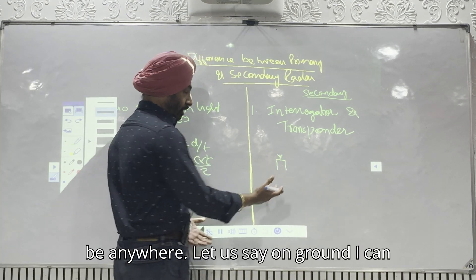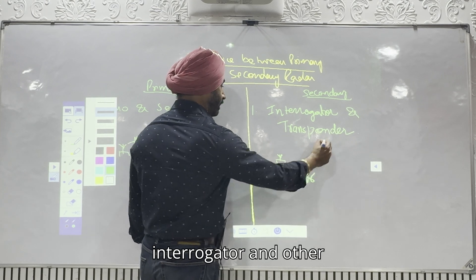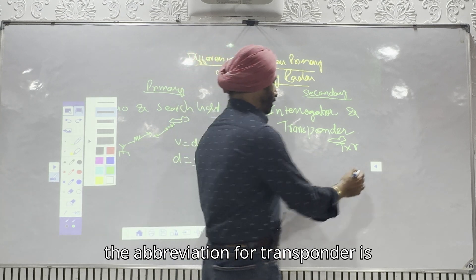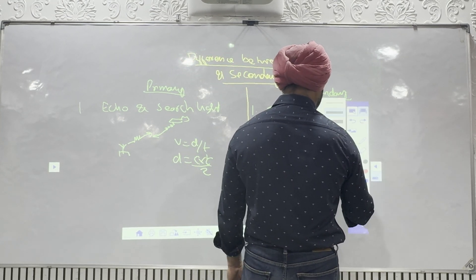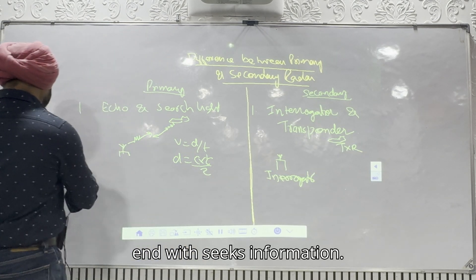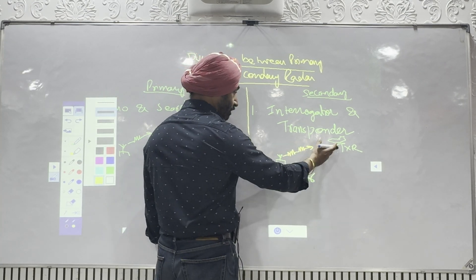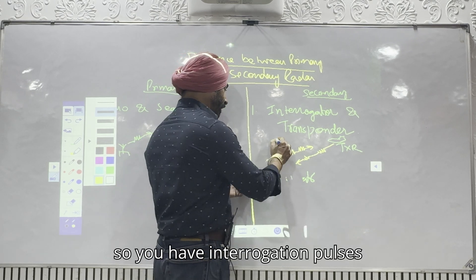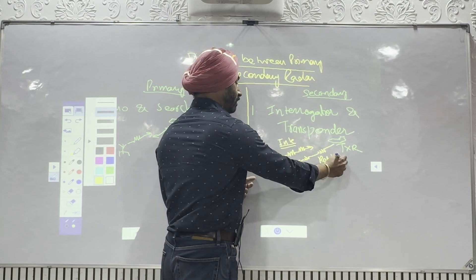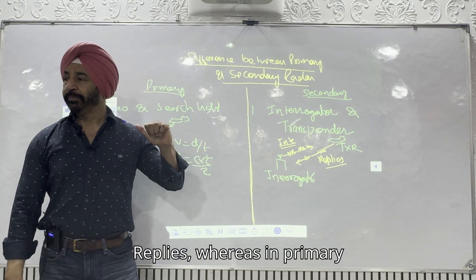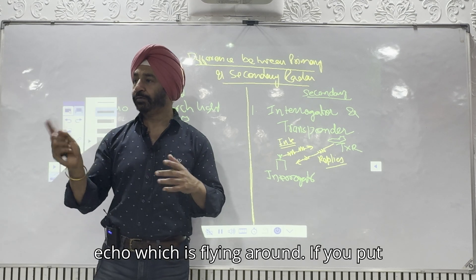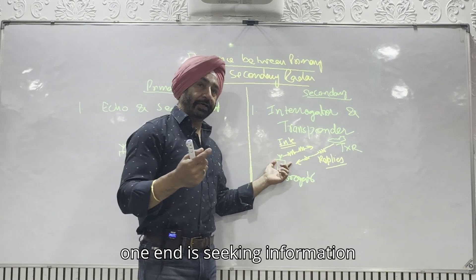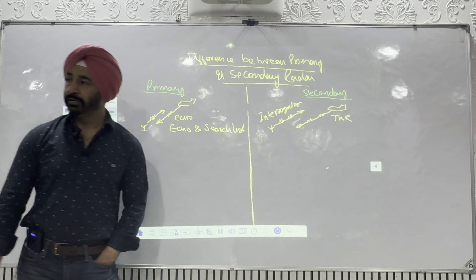One end could be an interrogator on the ground, and the other end is the transponder (TXR). TX is transmitter. The equation is simple: the end which seeks information asks for it; the end which is supposed to reply receives it, processes it, and then replies. So you have interrogation pulses and replies. Whereas in primary radar it is just echo — the pulse will go, strike, and come back. Here, one end is seeking information and the other end has to reply.